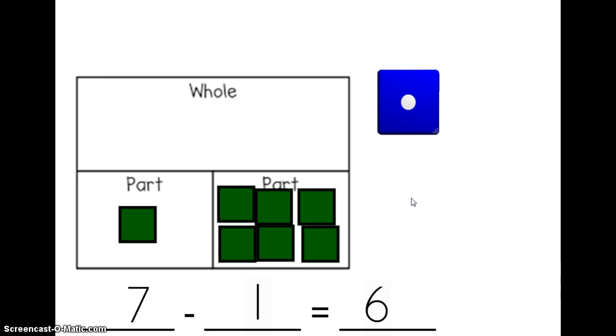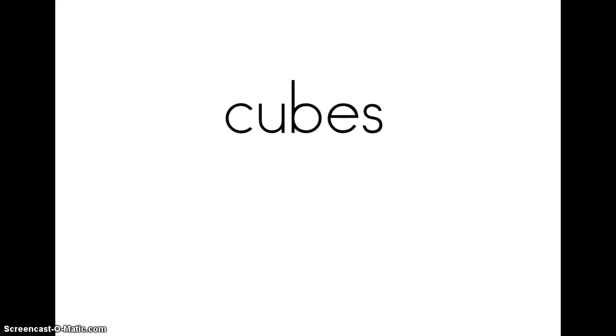Tomorrow we're going to be using part-part-whole mats with subtraction. We'll start with our whole, our big number. We'll break it apart or take away and slide some into one part, and then we'll see what's left to put into our other part. That's how a part-part-whole mat helps us in subtraction. On your homework sheet tonight, it asks you what math tool was used in tonight's video. I used cubes to help you with a part-part-whole mat. Please write the word cubes on the line on your homework sheet. See you tomorrow in class!